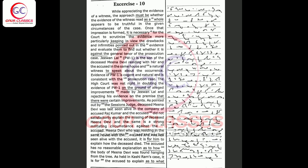Jeevan Lal (PW1) is the son of the deceased Meena Devi residing with her and the accused in the same house and a natural witness to speak about the occurrence. Evidence of PW1 is cogent and natural and is consistent with the prosecution case.